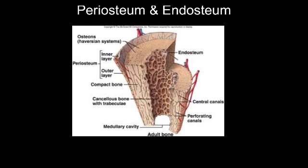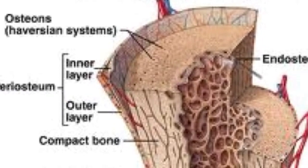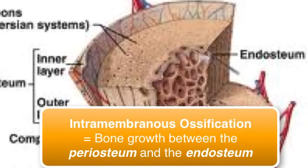Zooming back out from our microscopic view, I can introduce some other features of living bone. All bone has a membrane of dense connective tissue covering the outer bone called the periosteum, which supports blood vessels and osteogenic cells. There's also an endosteum on the inner membrane cavity with the same function. The periosteum and endosteum allow bones to grow in thickness — when you engage in weight-bearing exercises, osteogenic cells develop into osteoblasts that make the bones thicker and stronger. This process is called intramembranous ossification.